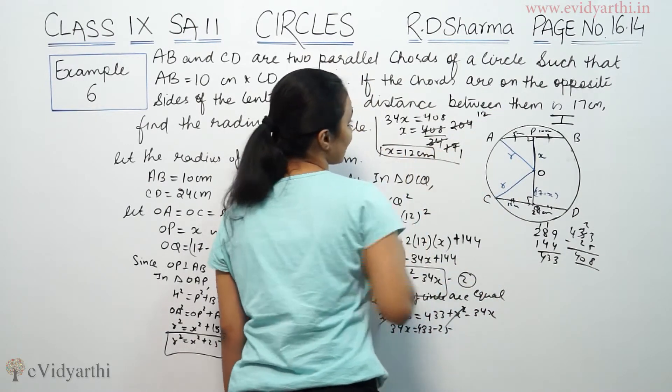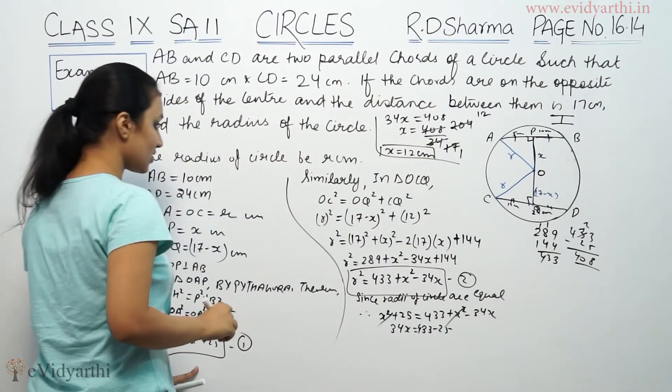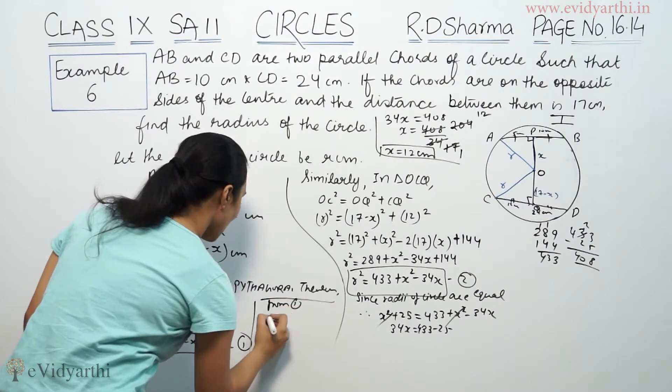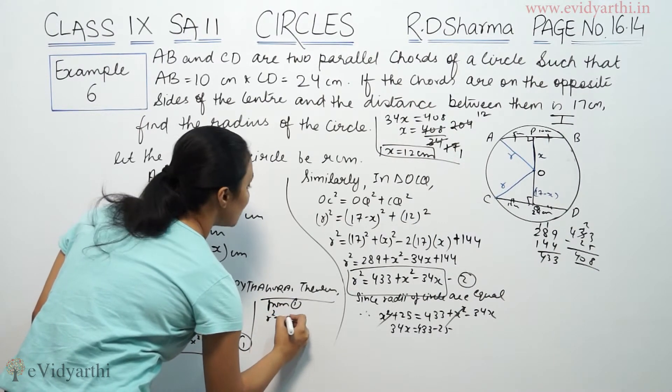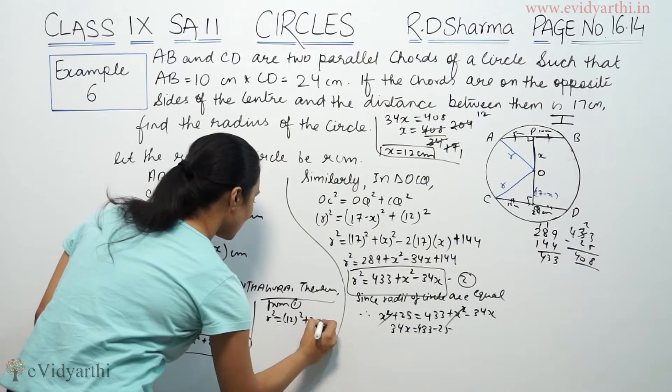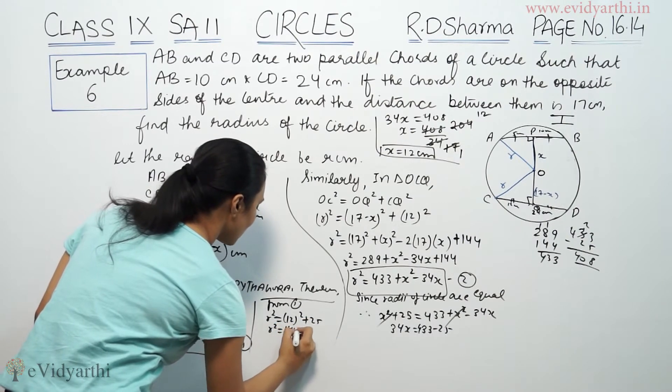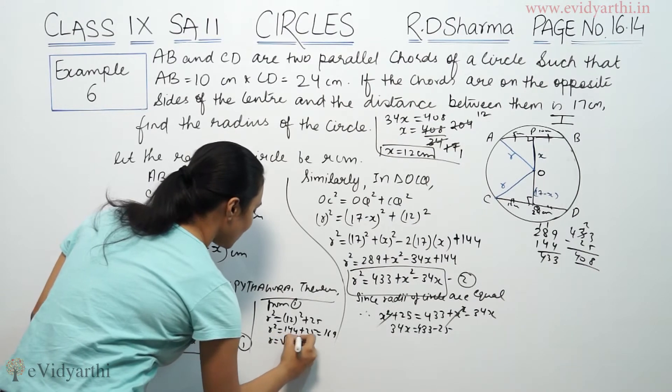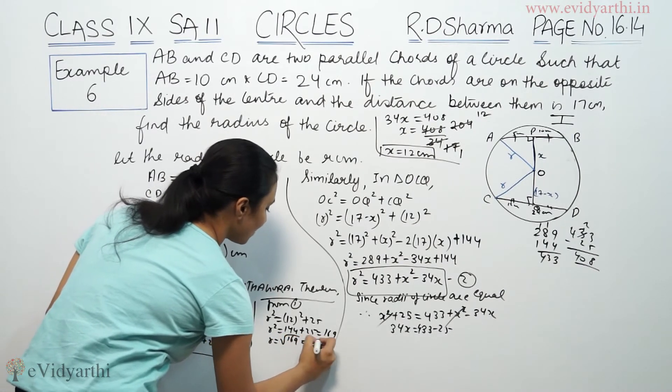This is 12 cm. We have x but we need radius. So from first equation, r square equals 12 square plus 25. This is 144 plus 25, which is 169. Taking square root, we get r equals 13 cm.